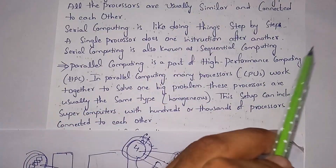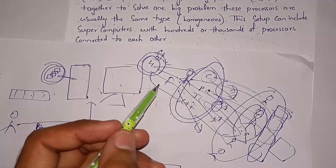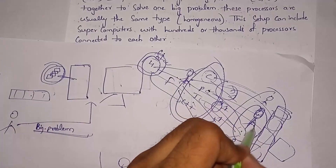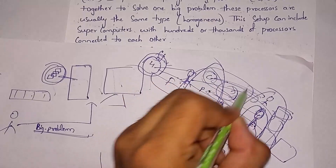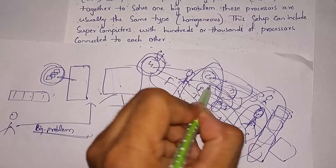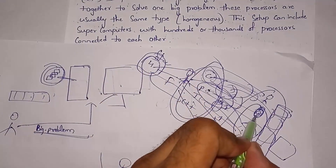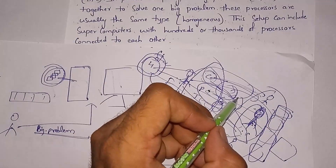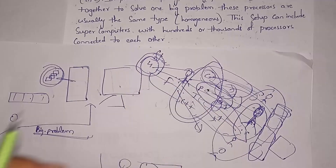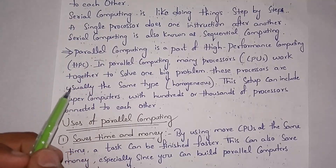Serial computing is like doing things step by step — a single processor does one instruction after another. If there is only a single person, they create C material first, then Python, then the next — step by step. A single processor works the same way, completing work sequentially. We also call serial computing sequential computing.